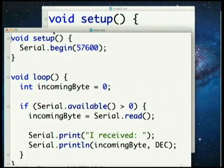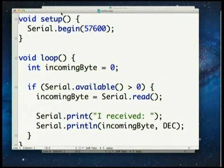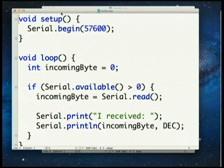A very simple application that reads from a serial port and echoes the bytes received back is shown here. It starts by setting up the serial port to run at 57,600 bits per second — that's the baud rate. As long as there's a byte available, it reads it, translates it into the decimal value, and writes it back out to the serial port. It's extremely simple — anybody can use this.